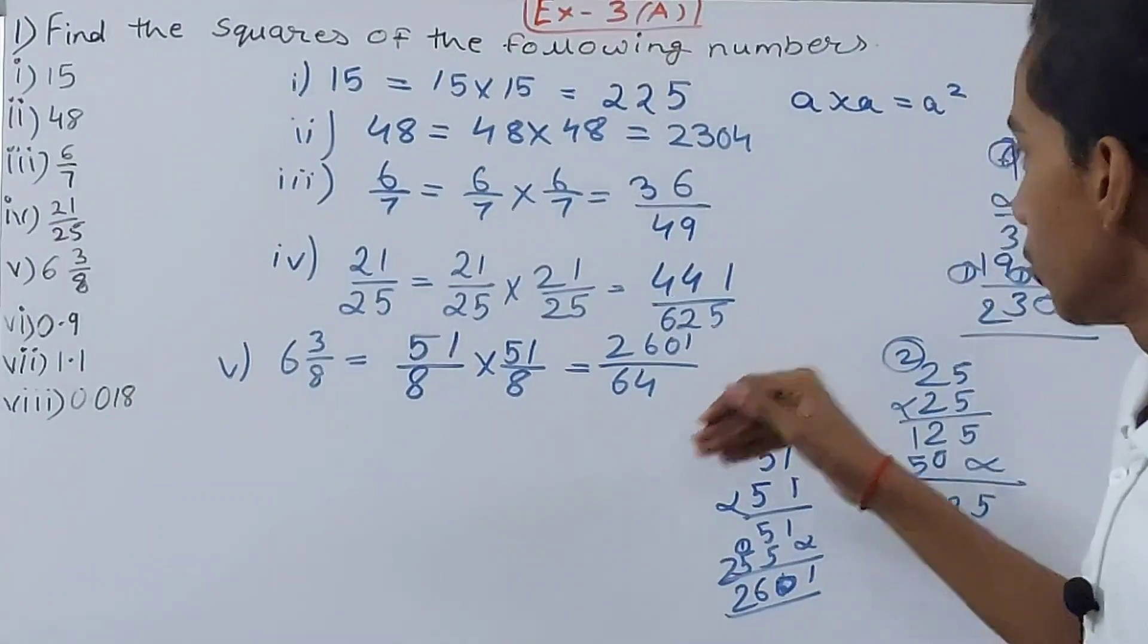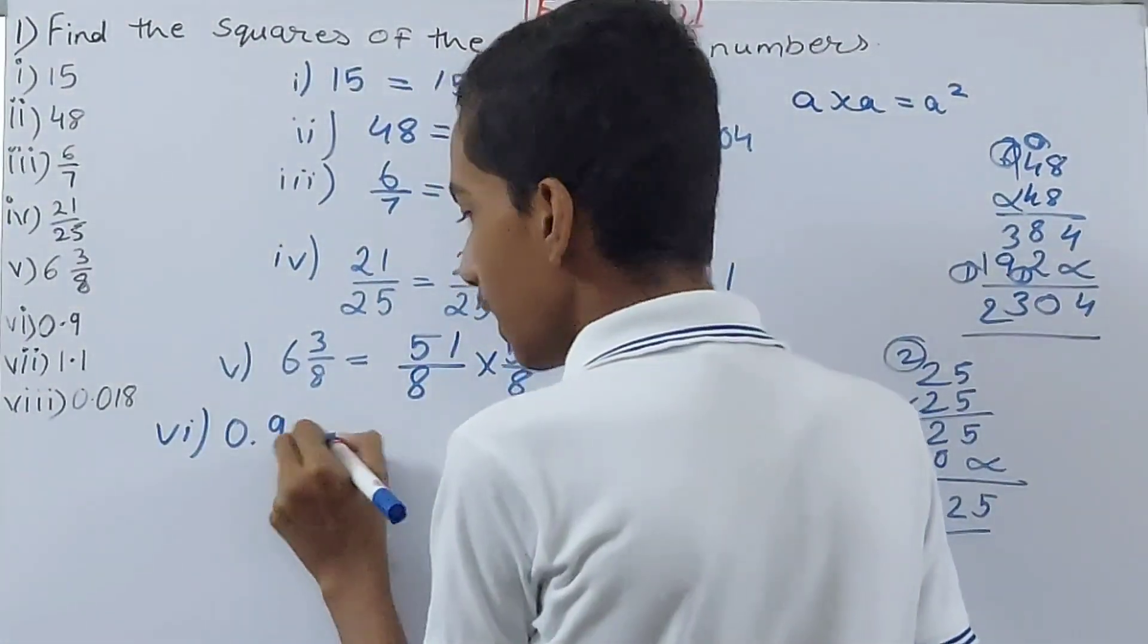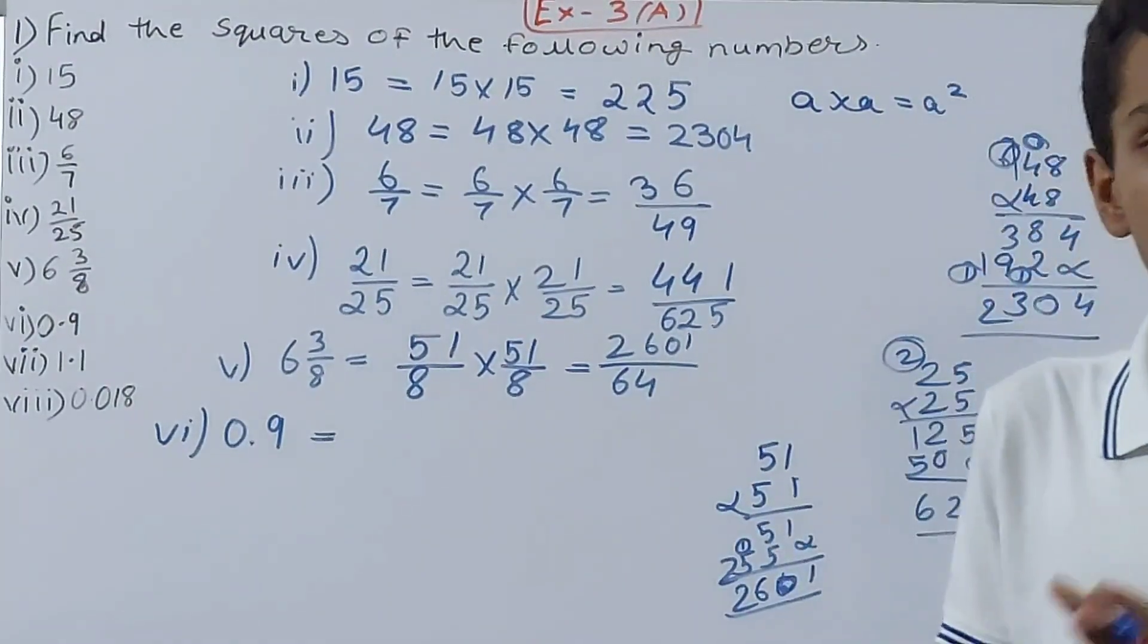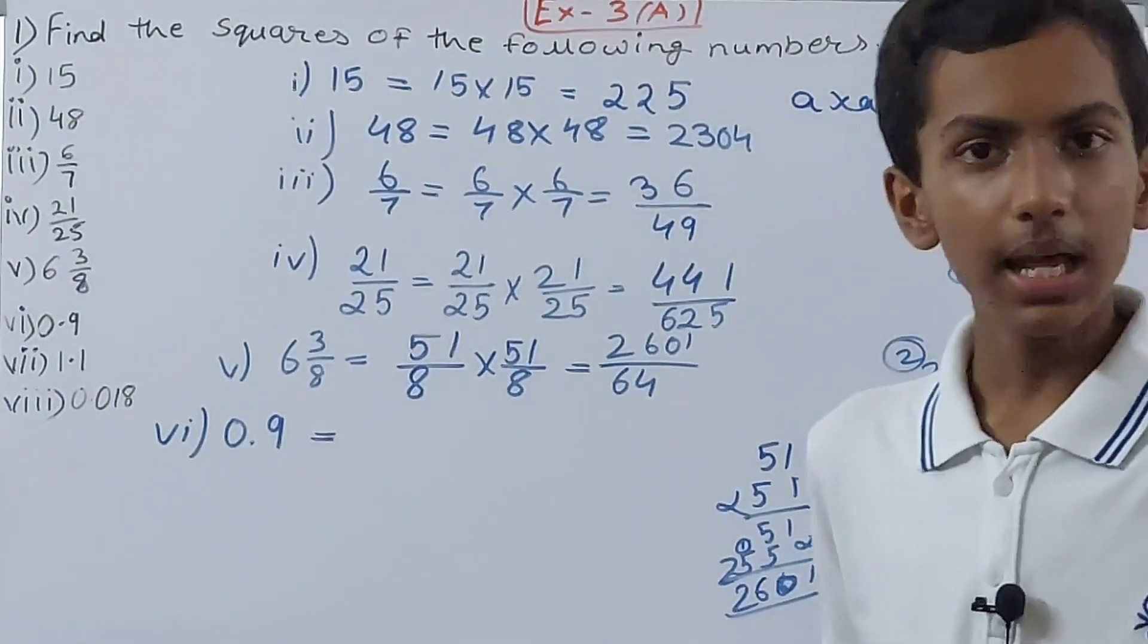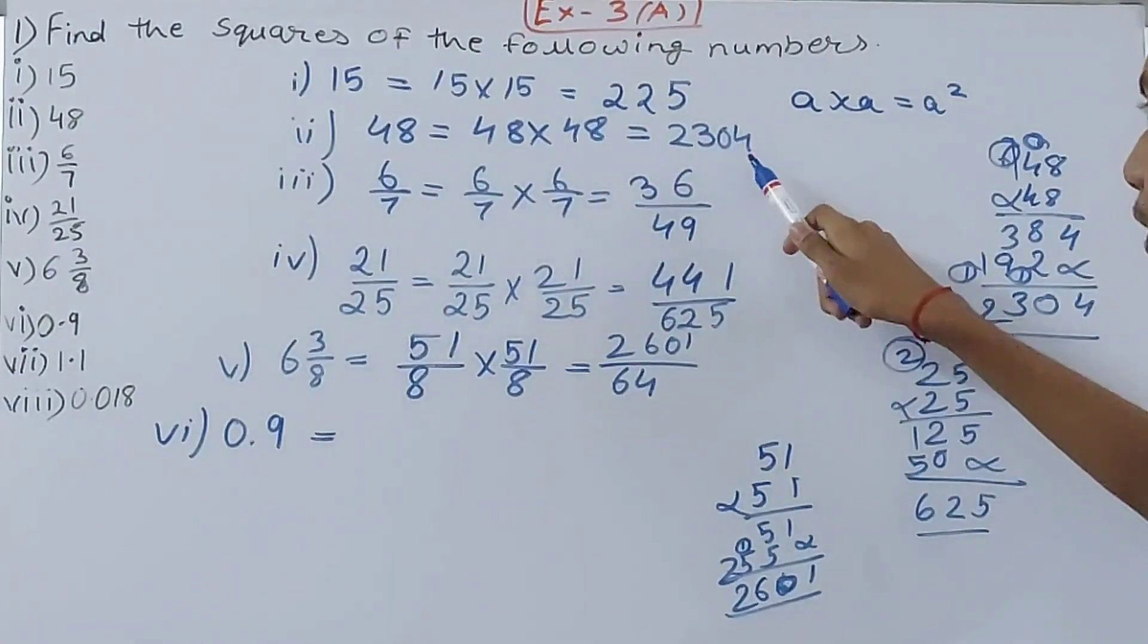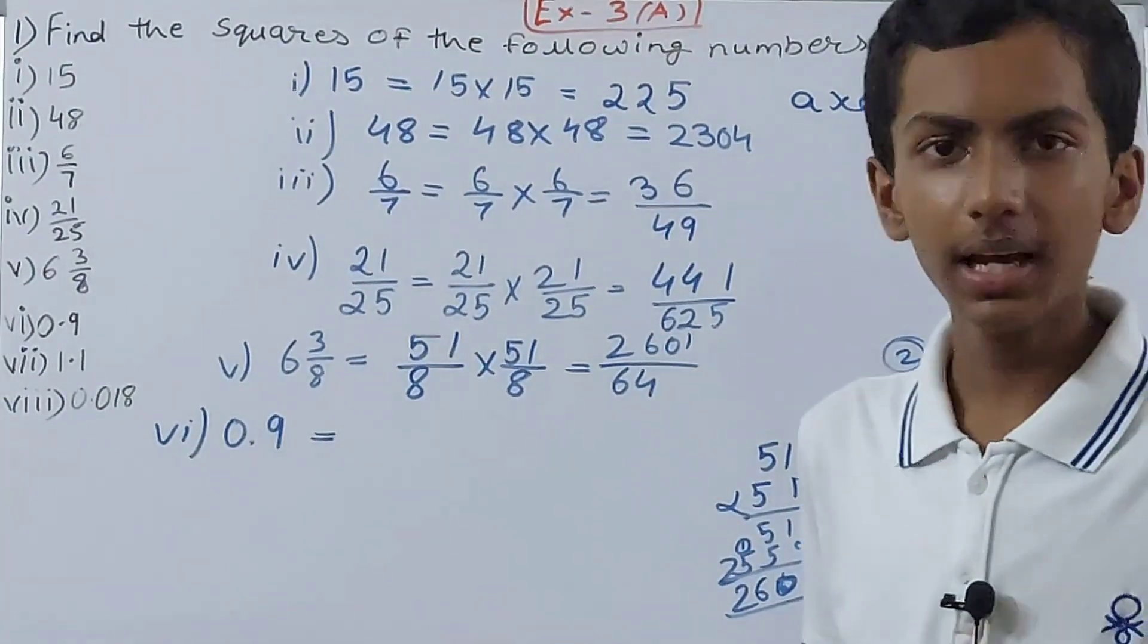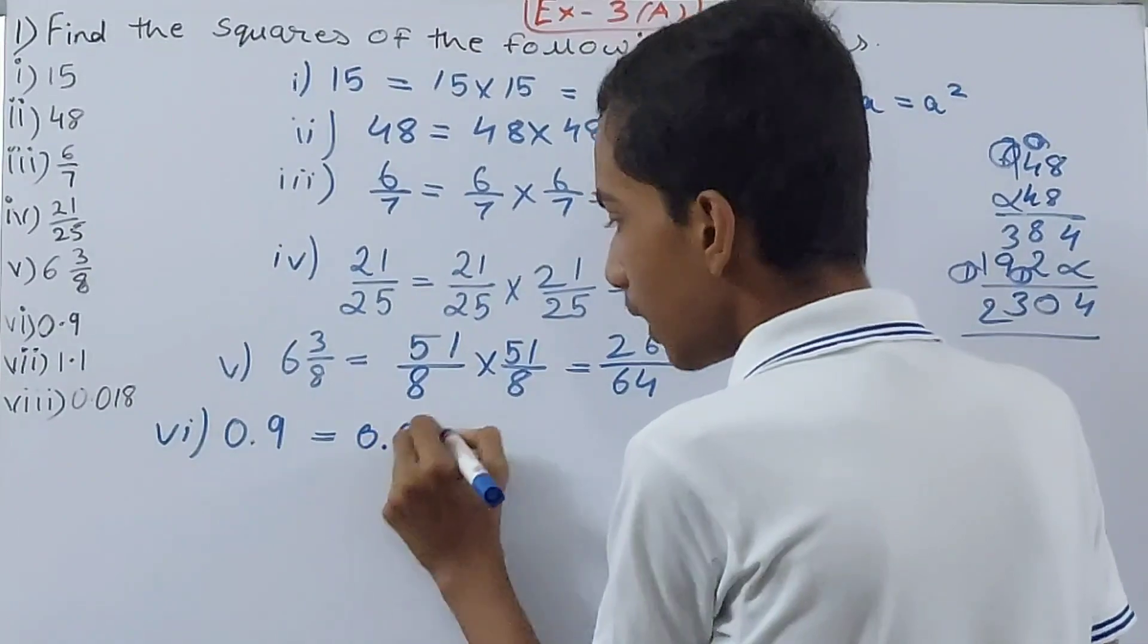Then we have 0.9. Now here is the thing: when it comes to decimal numbers, the square of a decimal number will always be smaller than it, right? We all have done squares of numbers, so we know that square is greater than the original number. Like 15 was squared, we got 225, which is greater than 15. 48 was squared, we got 2304, which is greater than 48. Same for all of these numbers.